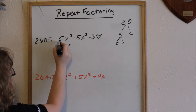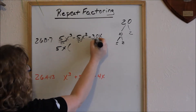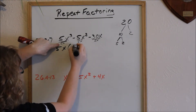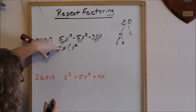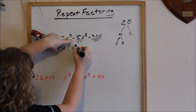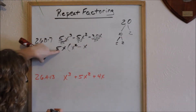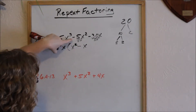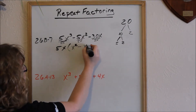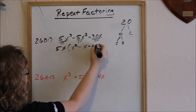If I factor out a 5x, it's like I'm dividing each little term by 5x. If I factor a 5x out of the first term, I'm going to be left with an x squared — check: does 5x times x squared equal 5x cubed? Yes. Then I'll have a negative; dividing 5x out leaves just x — does 5x times negative x give me negative 5x squared? Yes. Factoring out 5x from the last term leaves negative 30 divided by 5, which is negative 6, and the x's cancel.